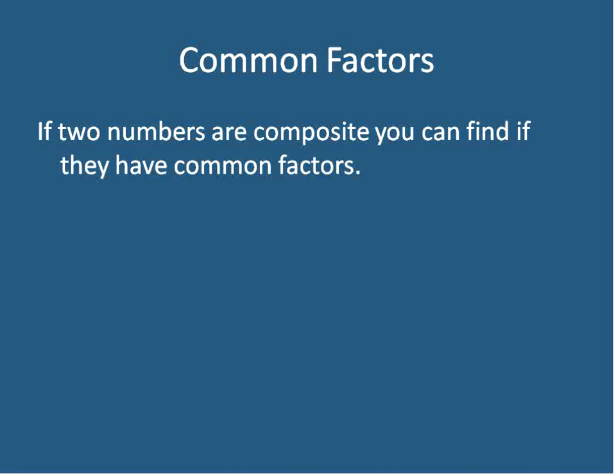We talked about common denominators before, and we talked about having numbers in common when we were reducing fractions, and that's essentially what it is. A common factor: if two numbers are composite, you can find if they have a common factor.